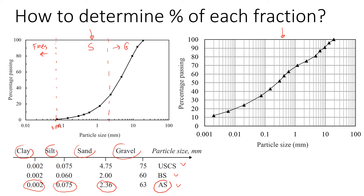Now let's calculate the percentage of each fraction, starting with gravel. We look at where the curve crosses the percentage finer axis at the 2.36 millimeter boundary, which is approximately 32 percent. This means 32 percent of the soil is finer than 2.36 millimeters, so gravel is 100 minus 32, which gives us 68 percent.